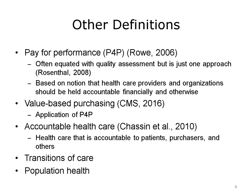Another term discussed often in the context of quality is pay for performance, sometimes abbreviated as P for P. Some people equate quality assessment with pay for performance, but it's important to remember that pay for performance is just one approach to measuring and acting on health care quality. The notion behind pay for performance is that health care providers and organizations should be held accountable financially for the quality of care, though providers and organizations also need to be held accountable in other ways.